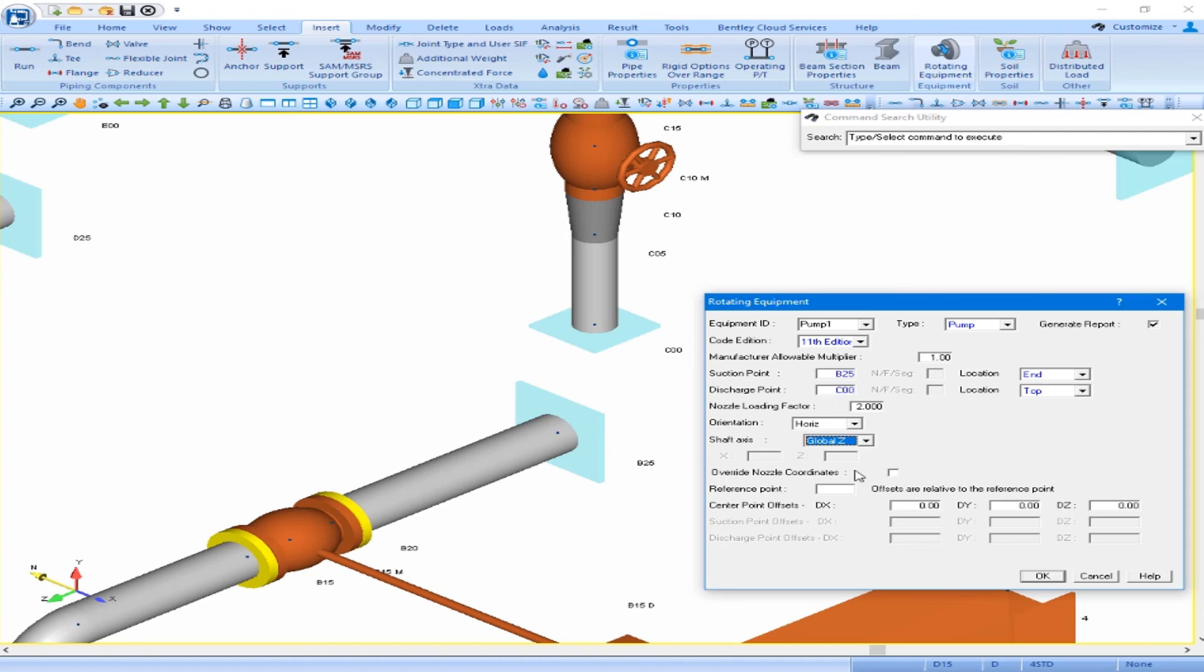So we need to reference that from a point that's currently in our model. We will reference that point from B25 and the offset to the center point from B25 is negative 0.85 feet in the DZ direction.